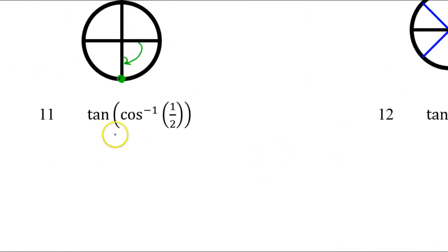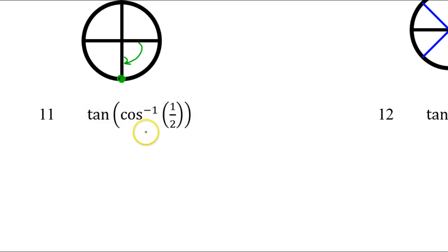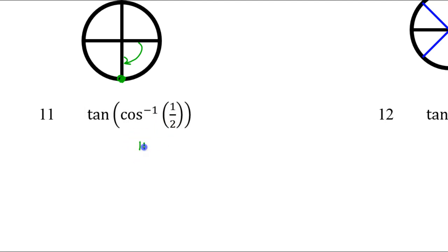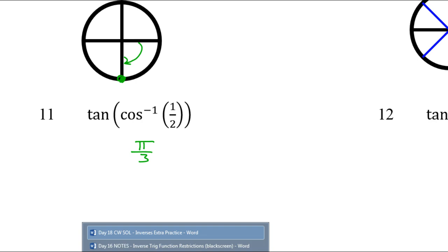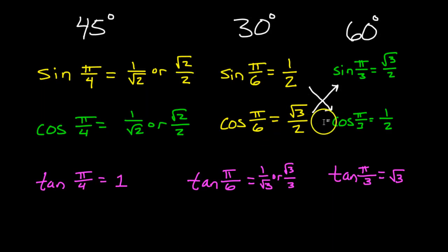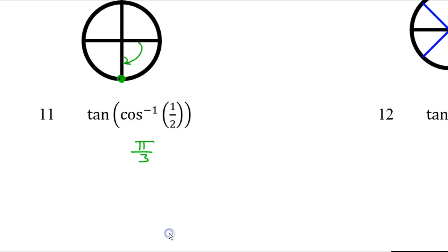Number 11 — here we have a trig function inside of a trig function. I recommend that you evaluate the inner function and then evaluate the outer function using the answer from step 1. Inverse cosine is just an angle — it's the angle whose cosine is 1 half. The cosine of what angle is 1 half? At this point you should have memorized that that is pi over 3. The cosine of pi over 3 is 1 half. So that means we now have the tangent of pi over 3.